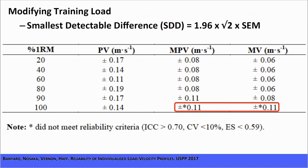This table shows how much normal variation — or the smallest detectable difference — in movement velocity there is before you can say an athlete is fatigued or getting stronger. So the velocity would need to improve or decline by these amounts to be sure that there is fatigue or that they are getting stronger.